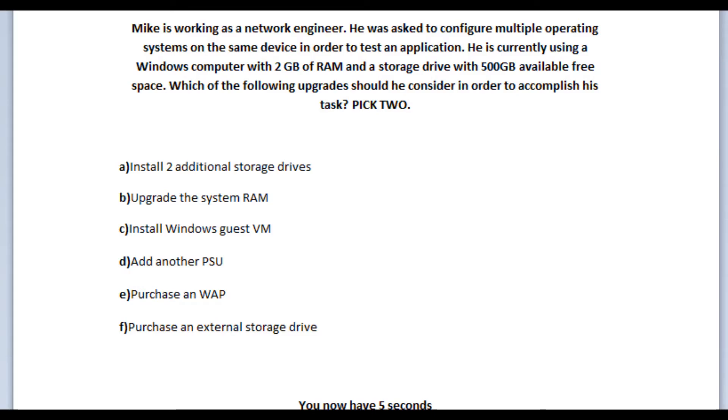Let us jump to our eighth question. Mike is working as a network engineer. He was asked to configure multiple operating systems on the same device in order to test an application. He is currently using a computer with 2GB of RAM and a storage drive with 500GB available free space. Which of the following upgrades should he consider in order to accomplish his task? And we are asked to pick from the following list 2 correct answers. Is it A, to install 2 additional storage drives? Is it B, to upgrade the system RAM? Is it C, to install Windows Guest VM? Is it D, to add another PSU? Is it E, to purchase a WAP? Or is it F, to purchase an external storage drive? You now have 5 seconds.